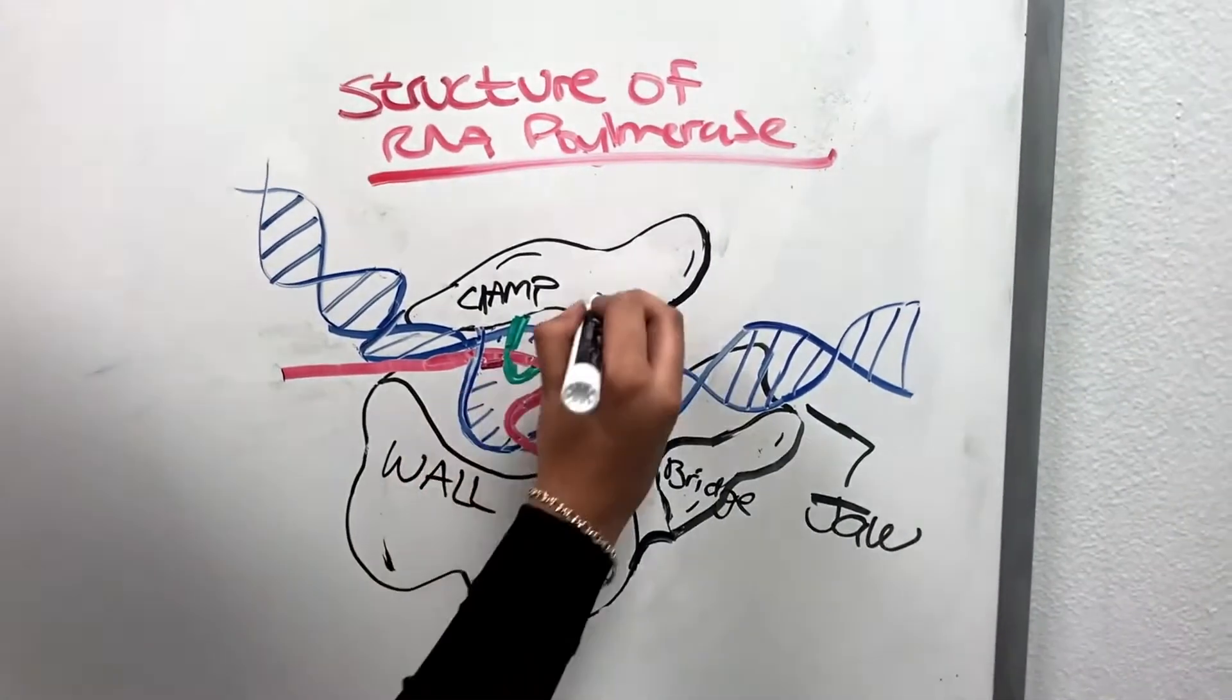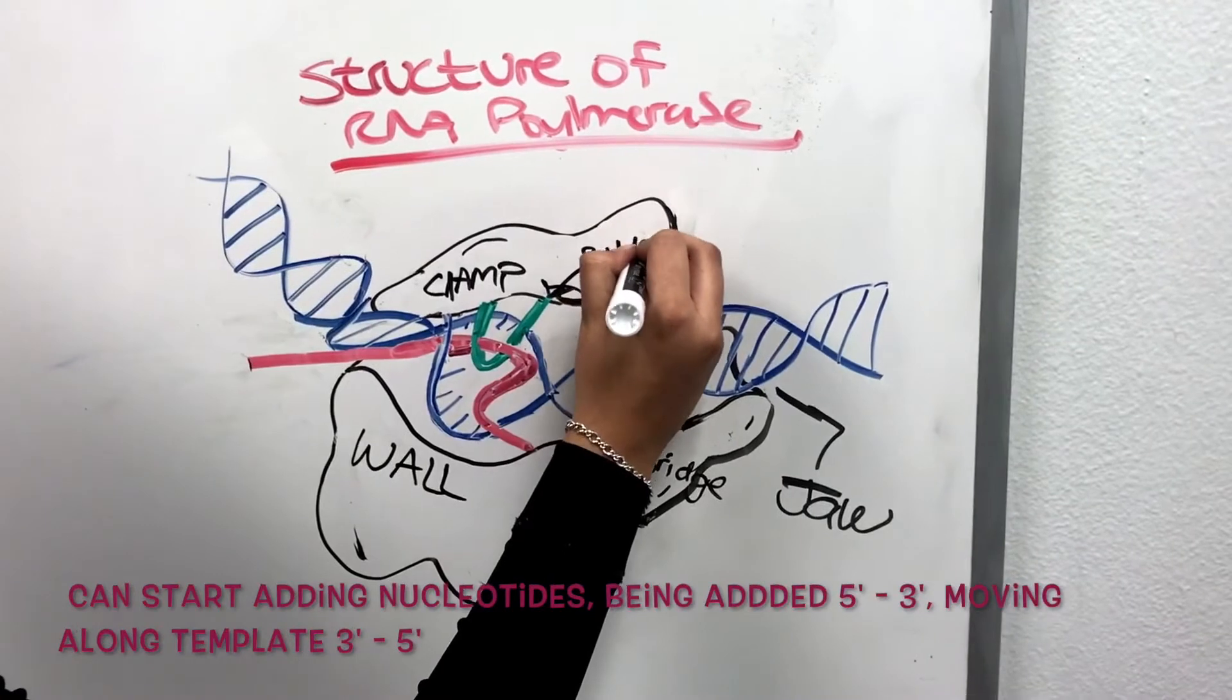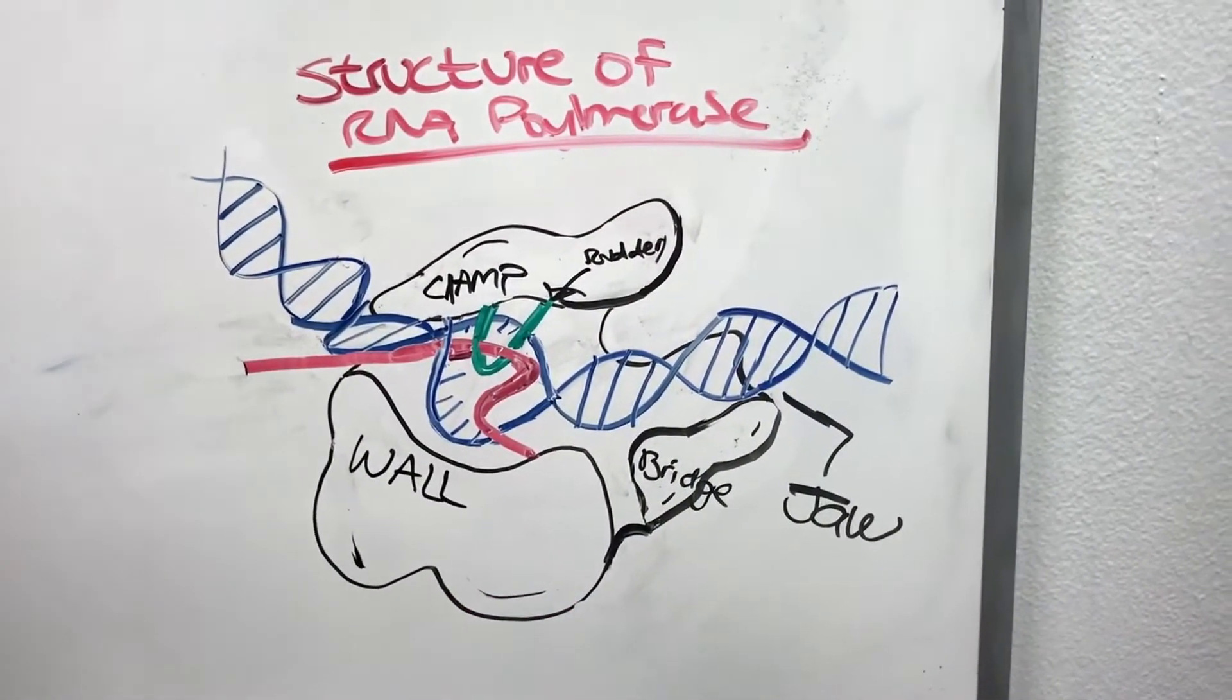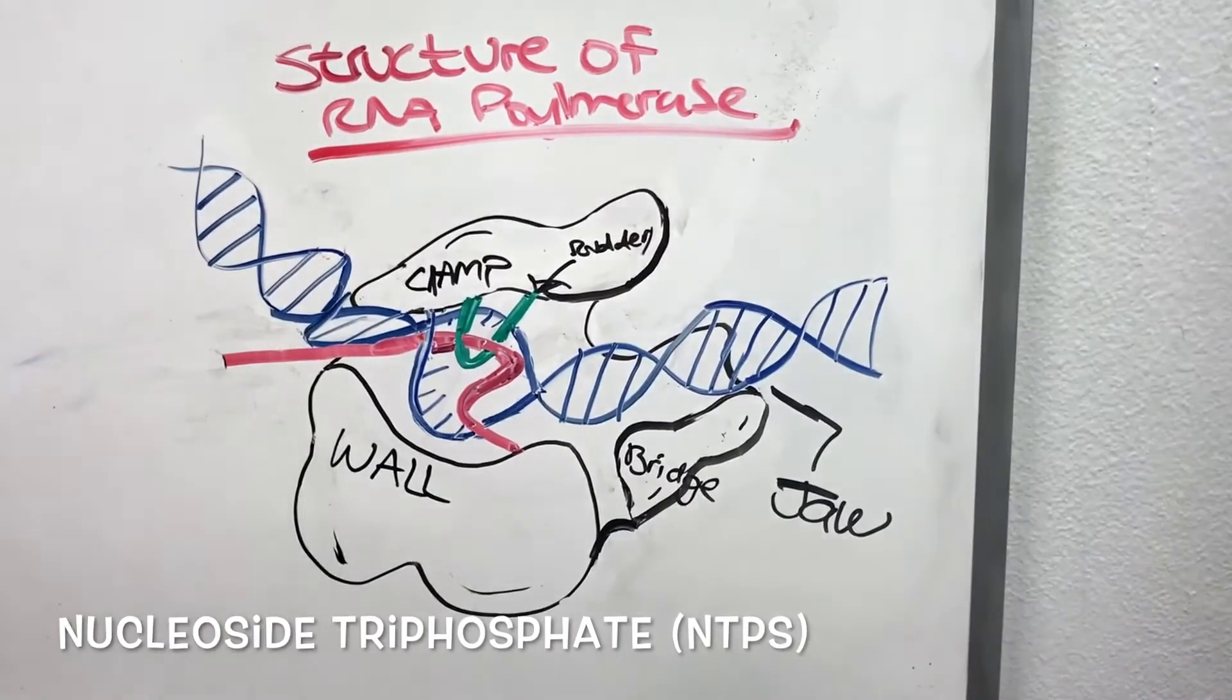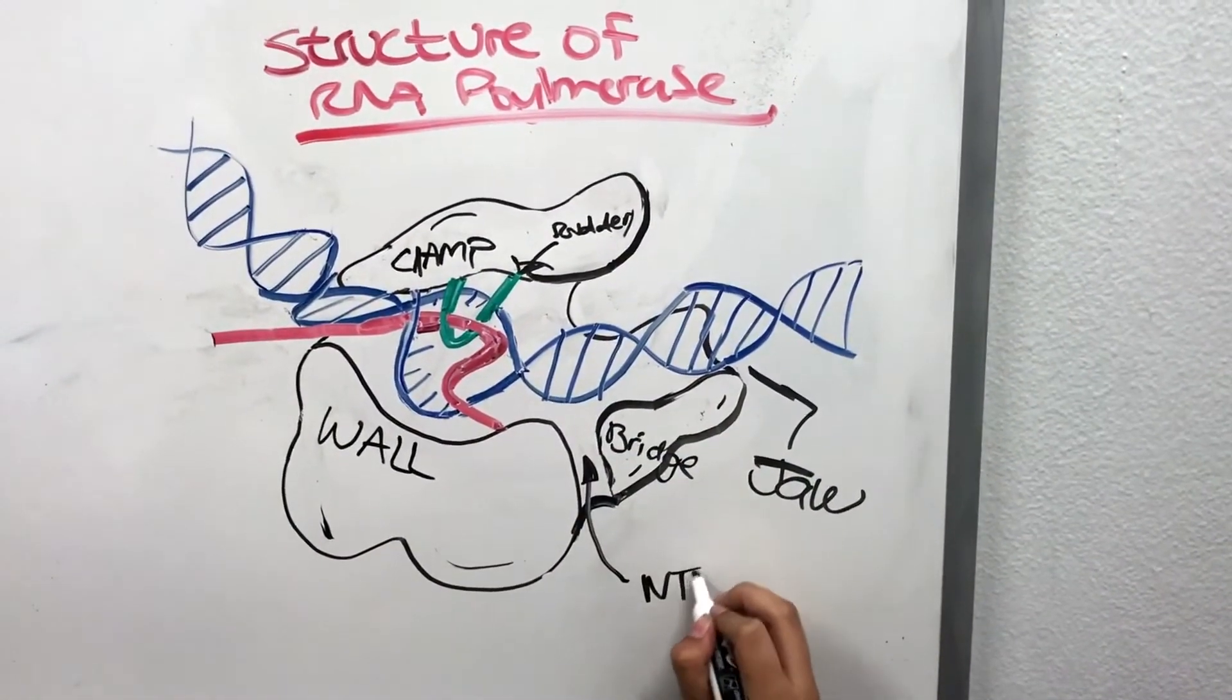At the rudder, it opens the DNA from close complex to open complex and starts developing the DNA and RNA hybrid formation. At the NTP is where the nucleotides are moving through this pore and adding onto our DNA.